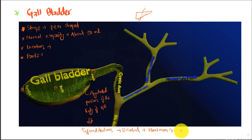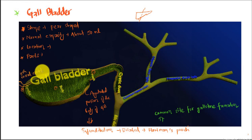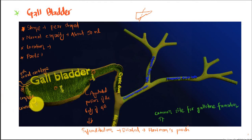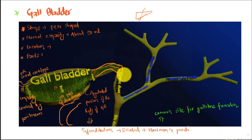If the infundibulum is dilated, it is known as Hartmann's pouch, and it is one of the common sites for gallstone formation due to biliary stasis. The fundus is present at the angulation of the ninth costal cartilage and is fully covered by peritoneum. The body is in direct contact with the first part of the duodenum, and the neck is S-shaped and connected to the cystic duct.